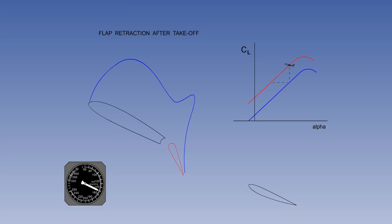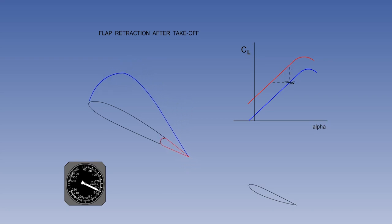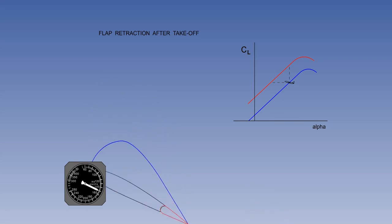This aircraft has just taken off and it is now time to retract the flaps. Note the indicated airspeed of 150 knots and the aircraft position on the flaps-down lift curve. As the flaps retract, the lift coefficient decreases. Lift is now less than the weight and the aircraft will sink. Increasing the angle of attack to keep lift the same is not an option because, as you can see from the lift curve, the aircraft will stall. Obviously, this is not the correct way to retract the flaps.